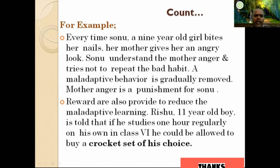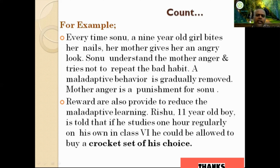For example, Ursono is a nine-year-old girl who keeps biting her nails. Her mother gets angry at this maladaptive behavior, so punishment is given and rewards are also provided to reduce the maladaptive learning, which helps reduce the behavior. Another example: an eleven-year-old boy is told to study for one hour regularly; afterwards he is allowed to do the activity of his choice. These examples of nail biting and study habits show how behavior therapy works through reward and punishment.